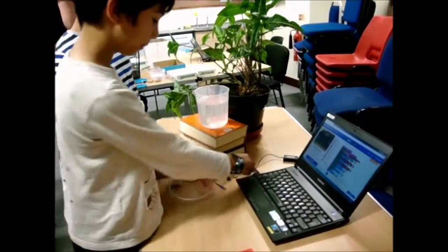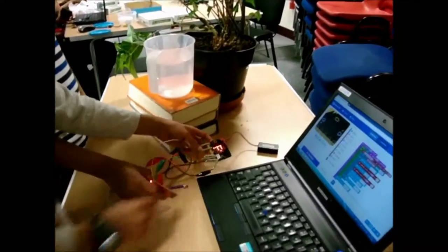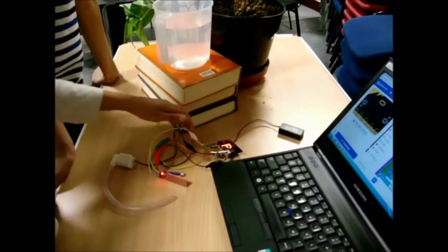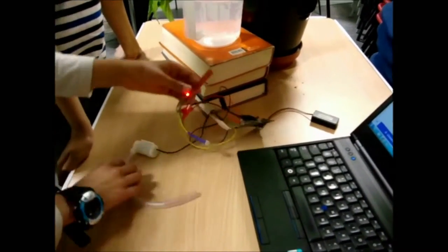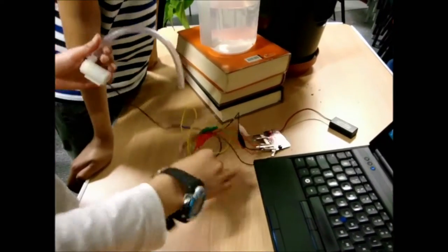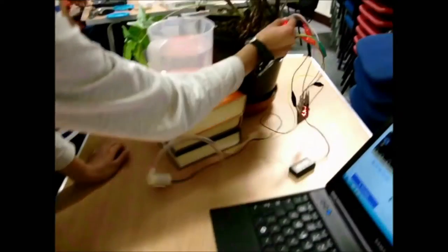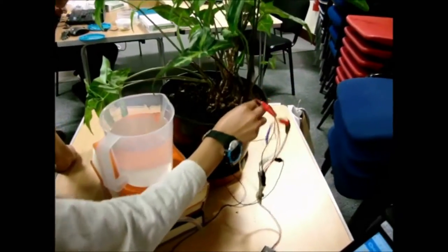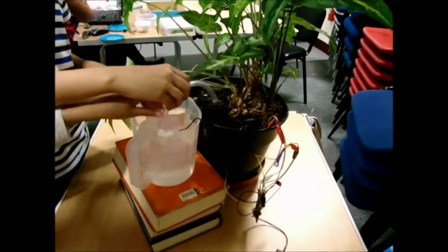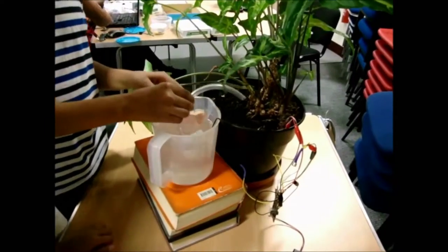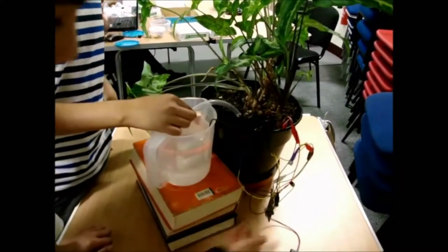Then we have to plug in the crocodile clips to the microbit with the battery on, and then we have to put the water sensor in the plant, and put the water pump onto the water, and then they will water it.